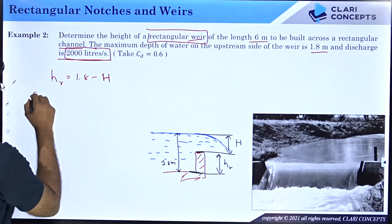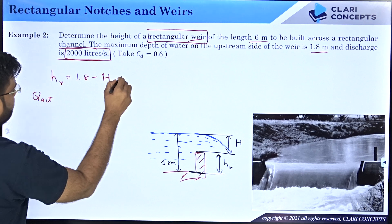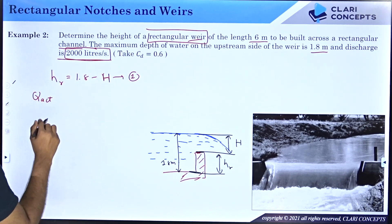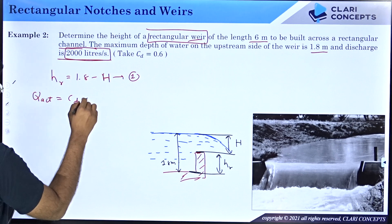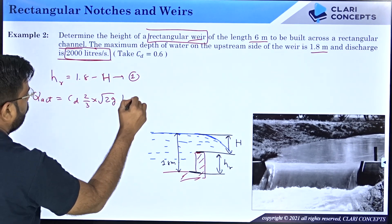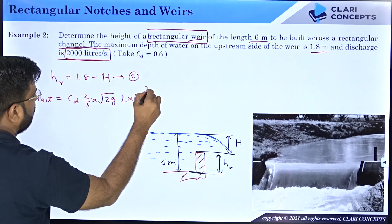Let me now mention the formula q actual. Let me say this is equation number 1. So in order to get hr I need to get capital H. Q actual is equals to CD into 2 by 3 into under root 2G into L into h raise to 3 by 2.